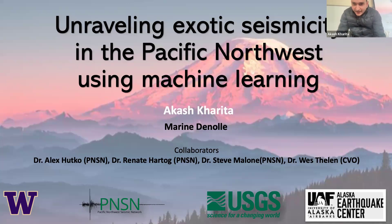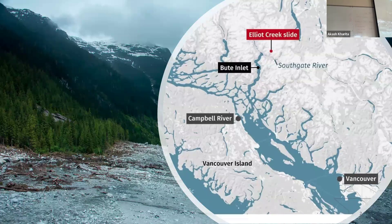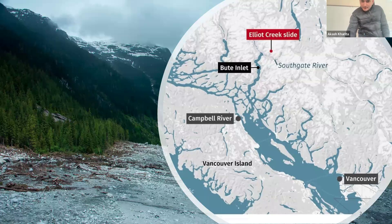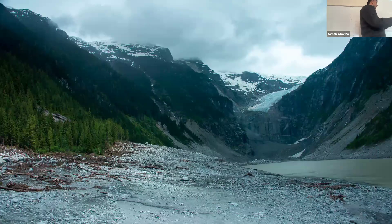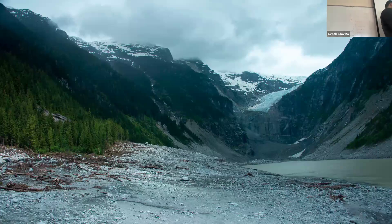I will start by taking an example of a massive landslide that occurred in the British Columbia region. It's located at the Iliad Creek slide, around 250 kilometers northwest of Vancouver. This was a massive landslide that happened in November 2020. The Granville Glacier used to extend all the way to this point in the last ice age, and due to deglaciation, which is further accelerated by climate change, this glacier is rapidly retreating.